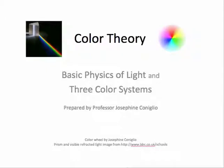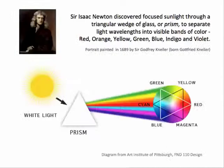Hello, this is Josephine Cornelio. I'm going to talk about the physics of light and three color systems in use today. Sir Isaac Newton discovered that focusing sunlight through a triangular wedge of glass or prism would separate the light wavelengths into the visible bands of color that we see: red, orange, yellow, green, blue, indigo, and violet. Sunlight passes through the prism, separating those colors, and we see the color wheel as a result of that.